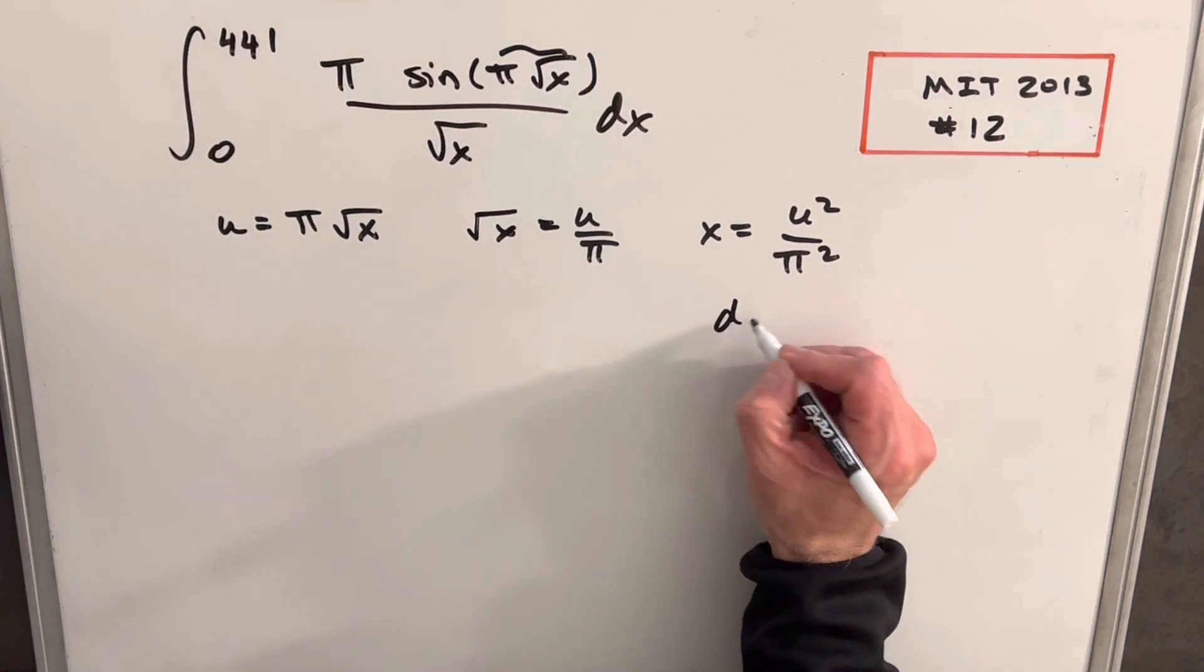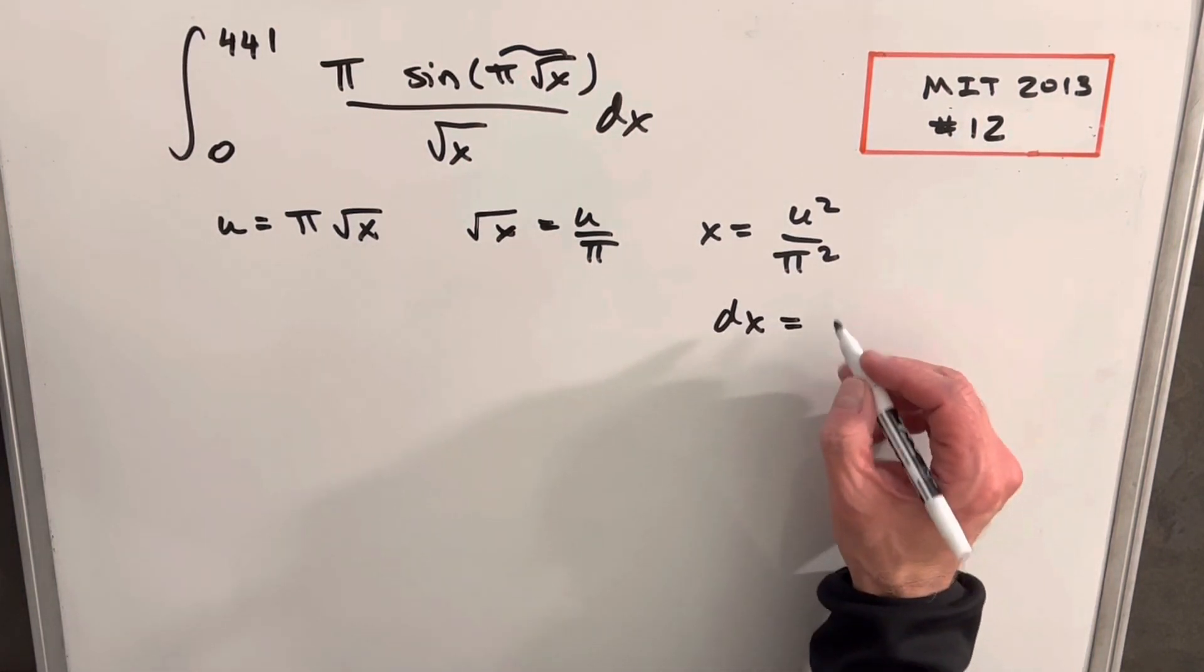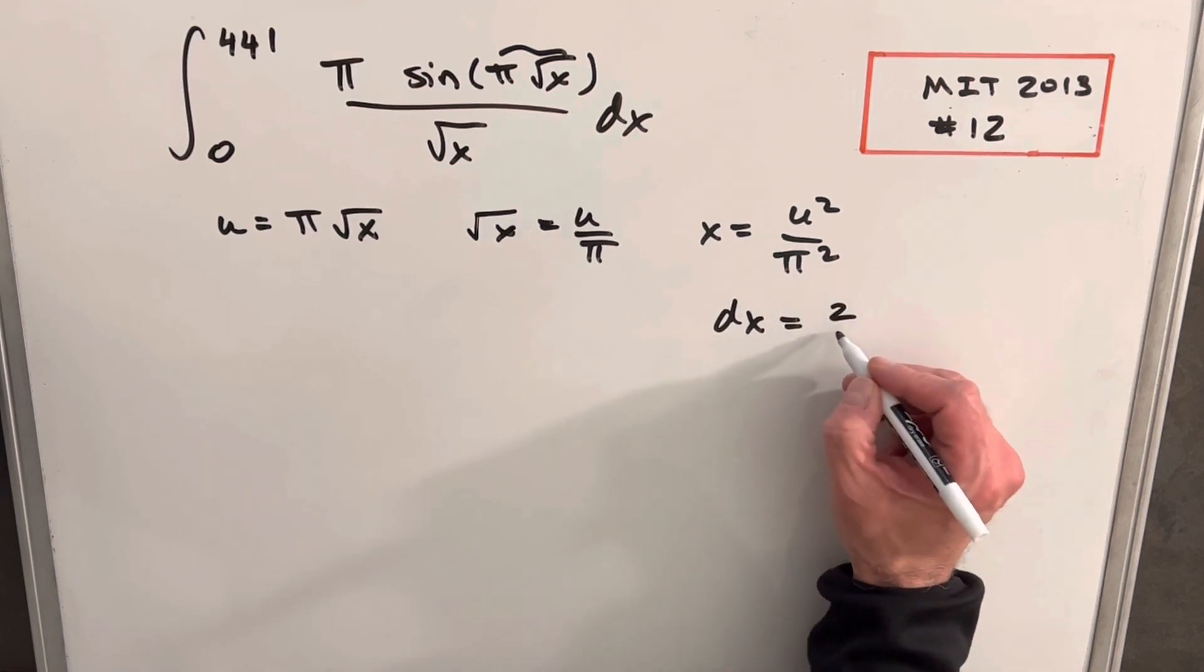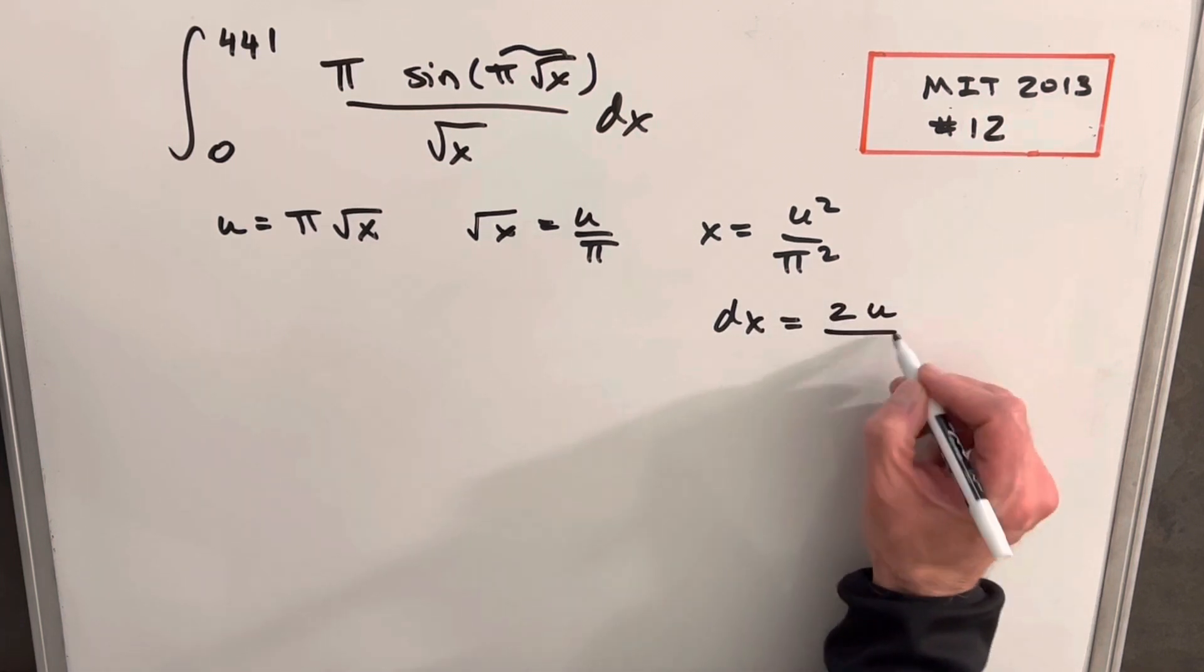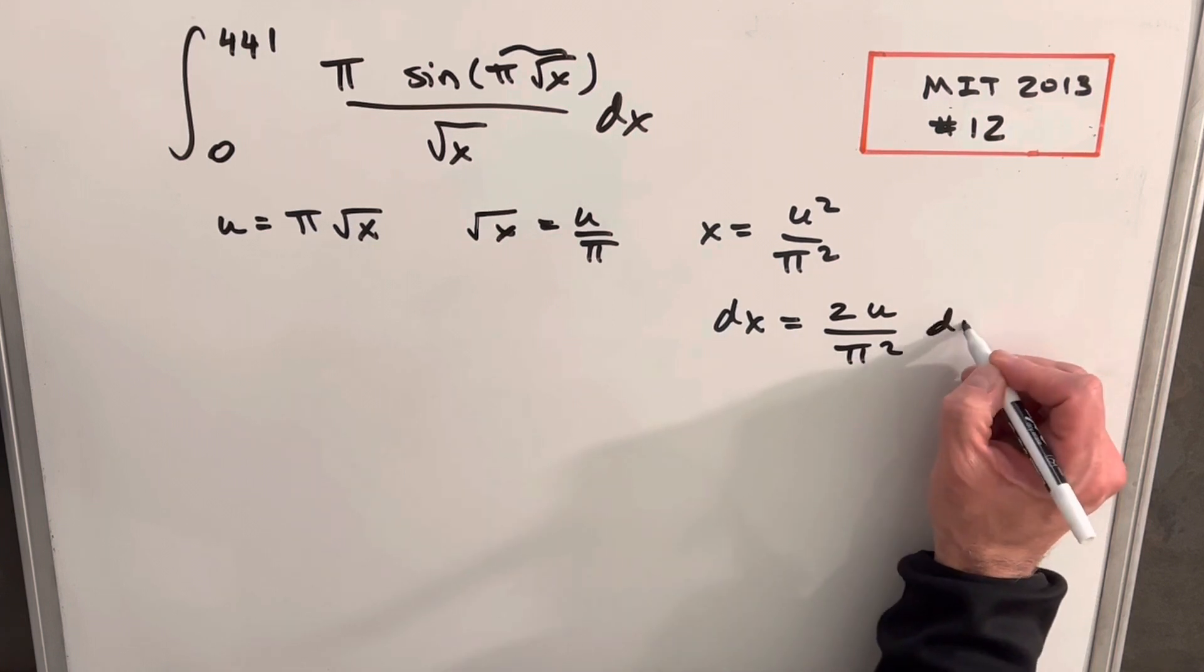And now I'll just find my derivative. So our dx is going to be, pi squared is just a constant, so we're going to have 2u over pi squared du.